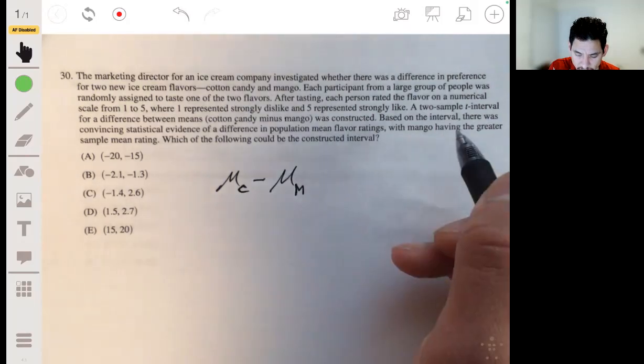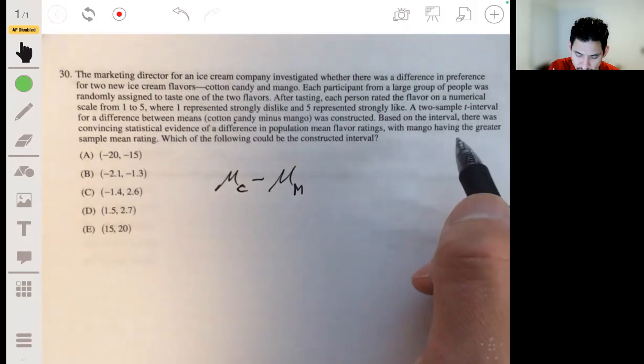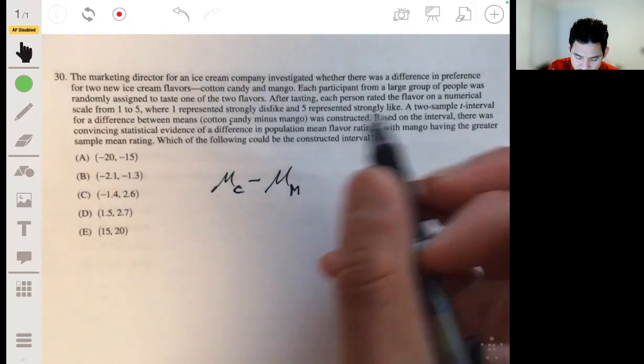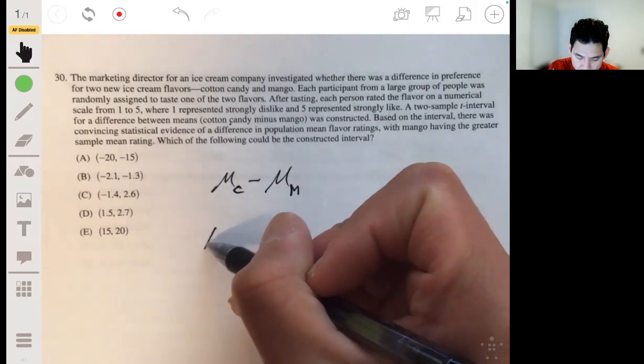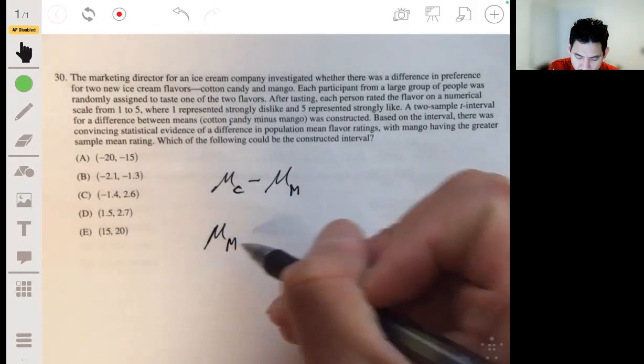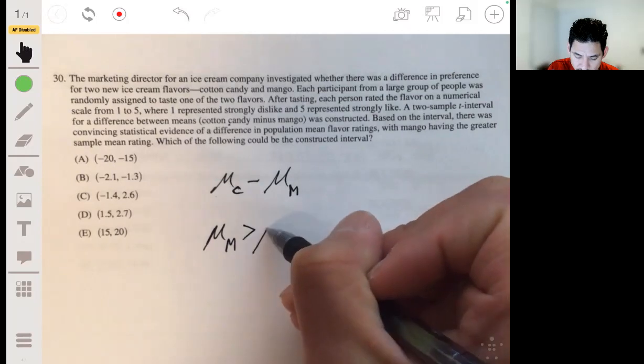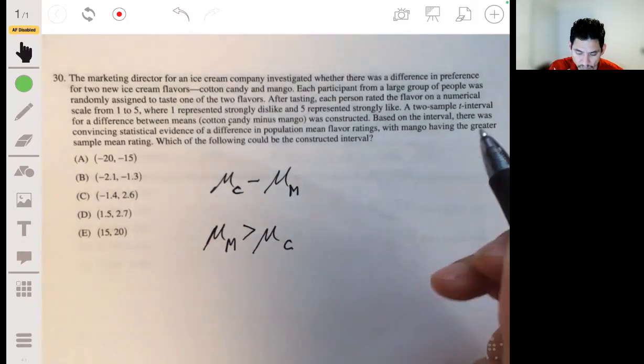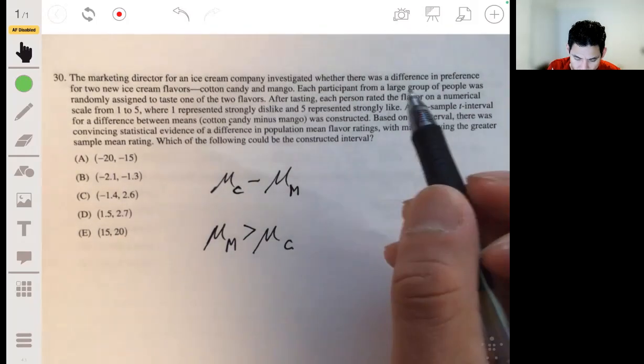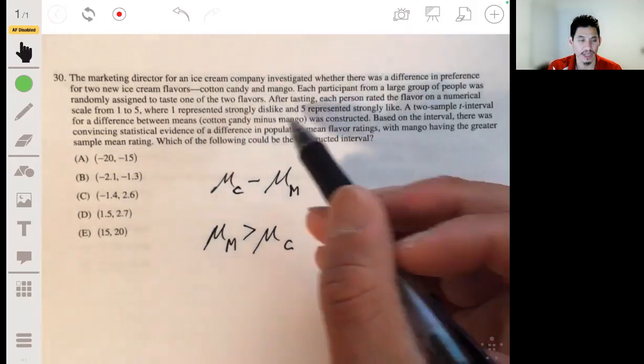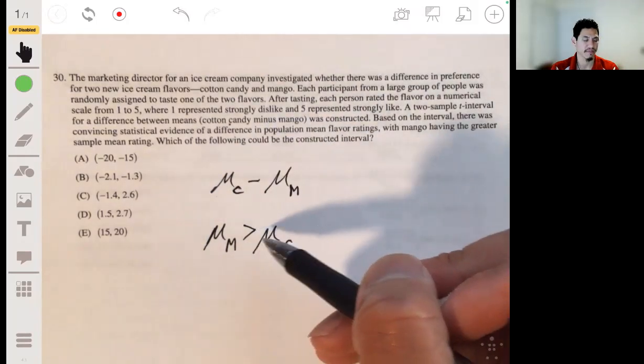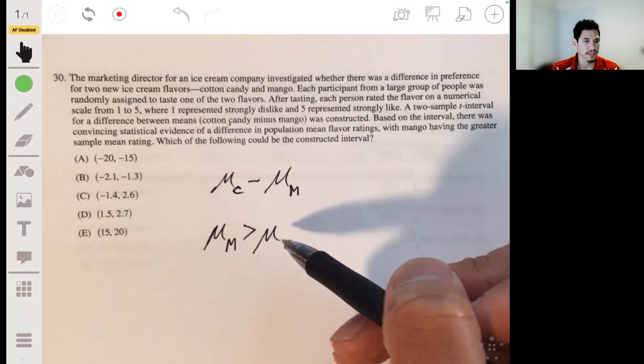So what this is saying is that the sample mean ratings, the mean of mango, mu sub m, is greater than the mean of the cotton candy. So mu sub m is greater than mu sub c.